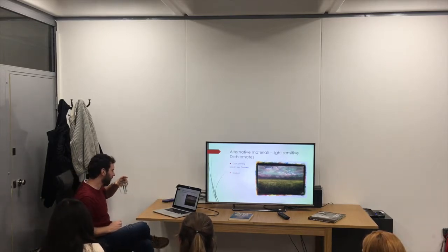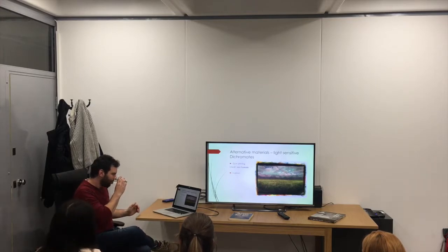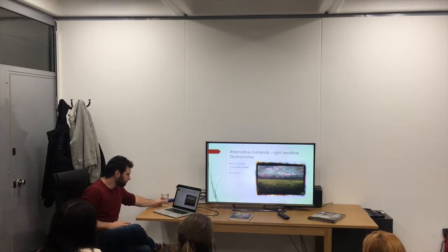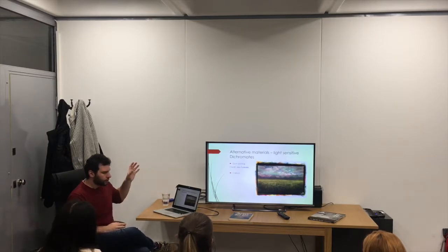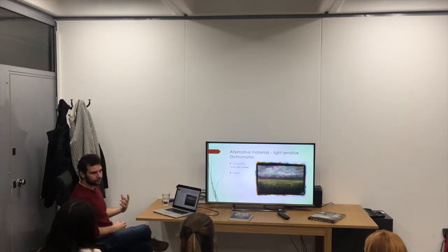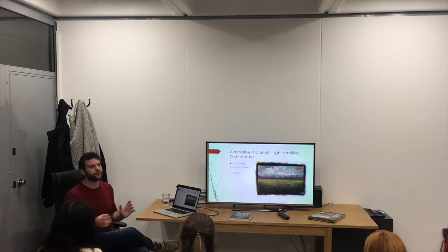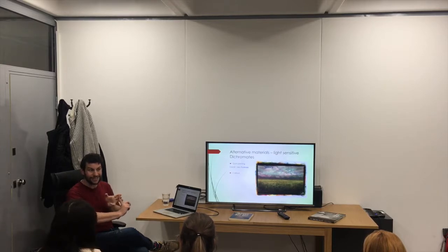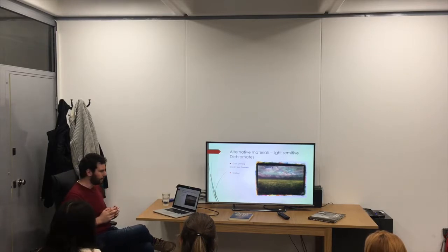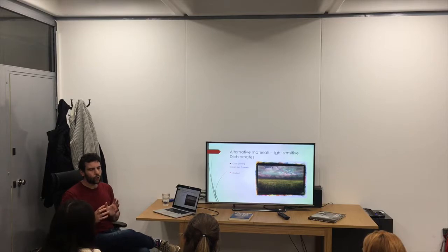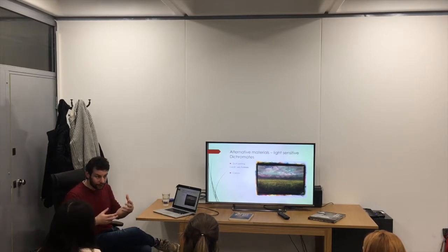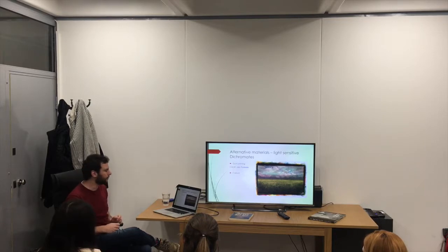Now we're getting into what's more traditionally talked about in terms of alternative photography. There are many light-sensitive materials, not just silver. When you talk about analogue photography, you're often talking about silver gelatin — silver bromides, silver chlorides, silver iodides, the silver halides. These are light-sensitive, but there's lots of other stuff that's light-sensitive too. Silver is the quickest light-sensitive material, which is why it was used for film and paper — quicker, cheaper, and easier to make commercial light-sensitive materials.